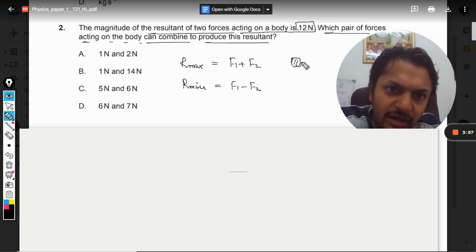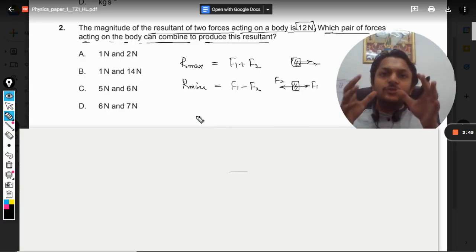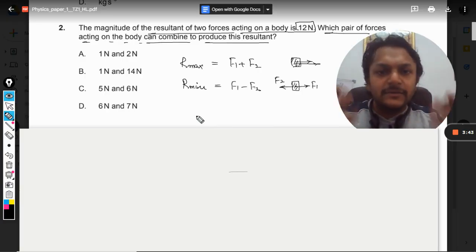To explain it, I can just make a diagram here. You see, this is F1 and this is F2. Obviously, the resultant is maximum. And in this case, this is F1 and this is F2. So this is going to give you the minimum resultant.